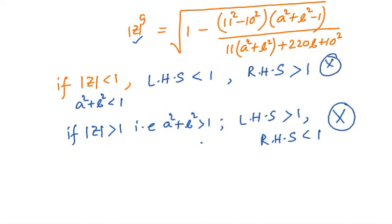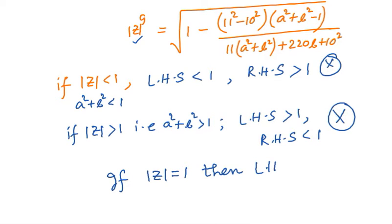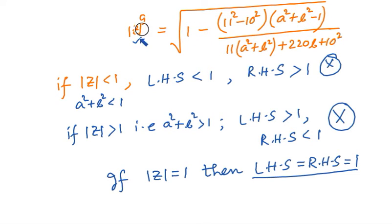From these two contradiction cases, equality can only hold if mod z takes the boundary value of 1. If mod z equals 1, then LHS equals RHS equals 1 — because the bracketed term becomes 0, making RHS equal to 1 and LHS also equal to 1. Therefore the final answer is mod z equals 1.